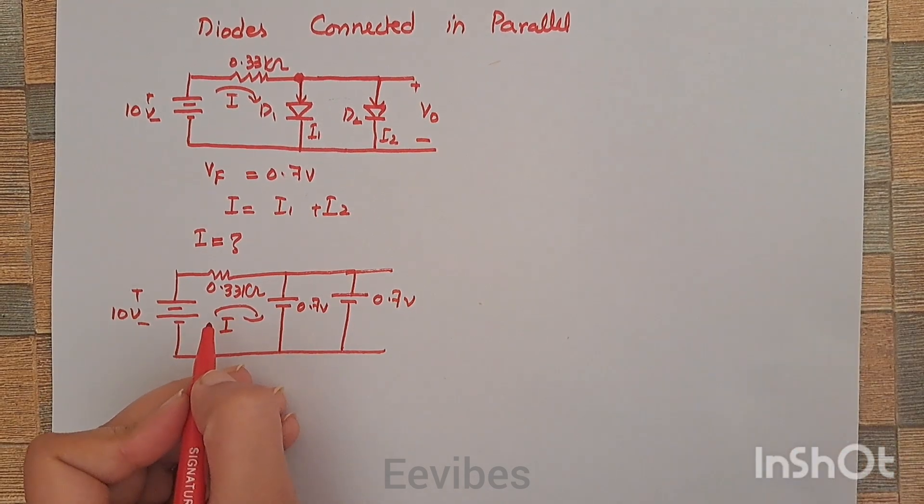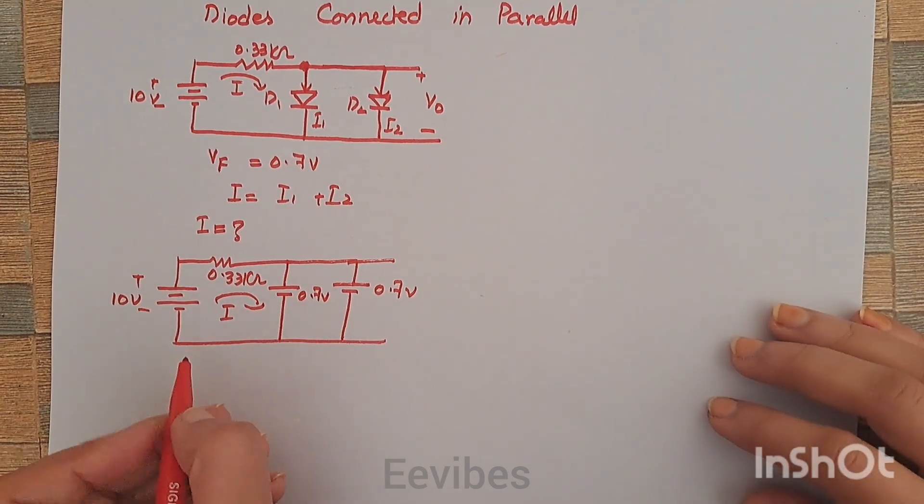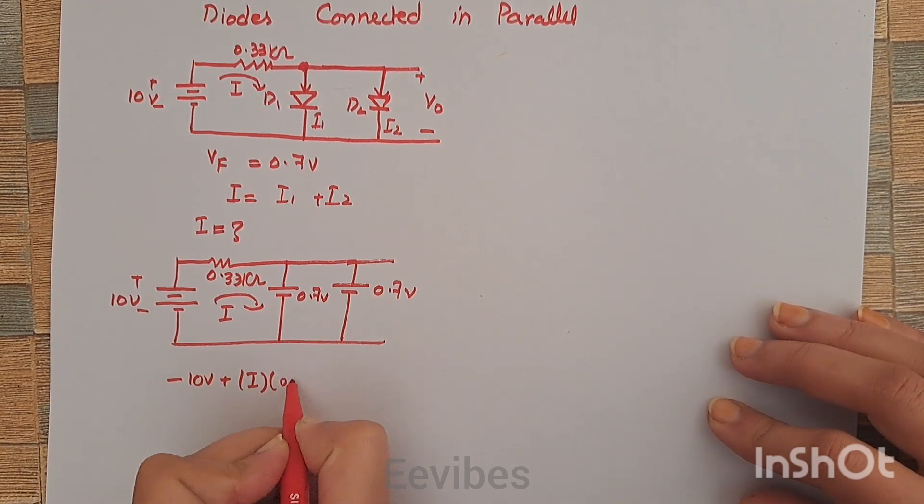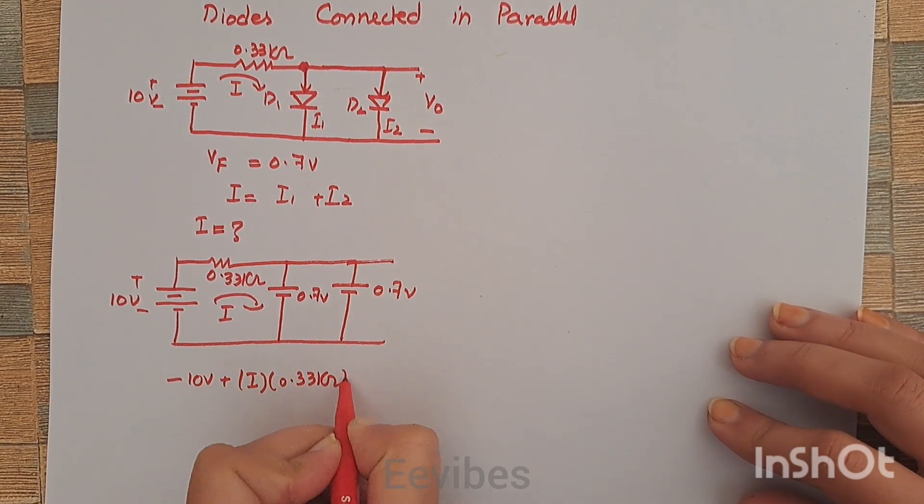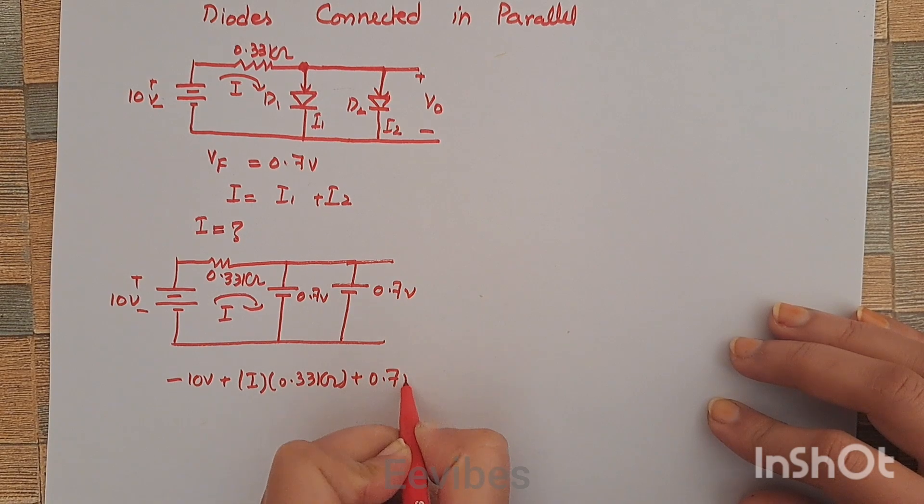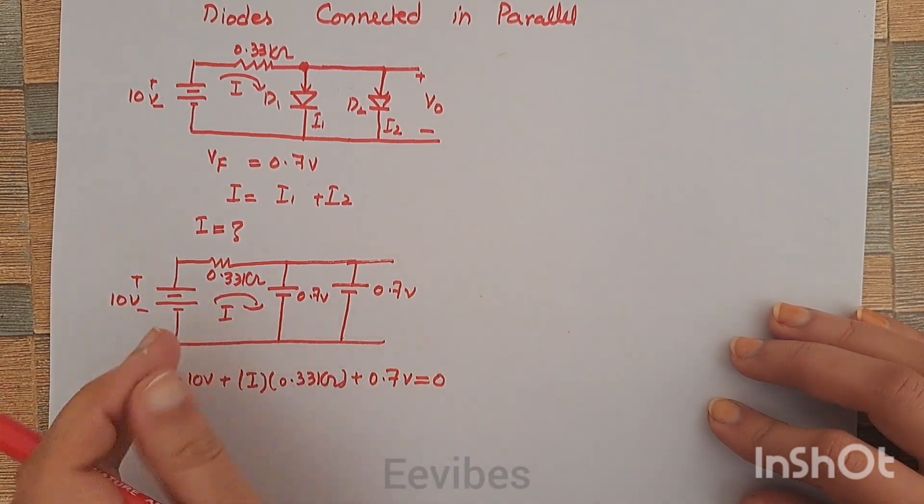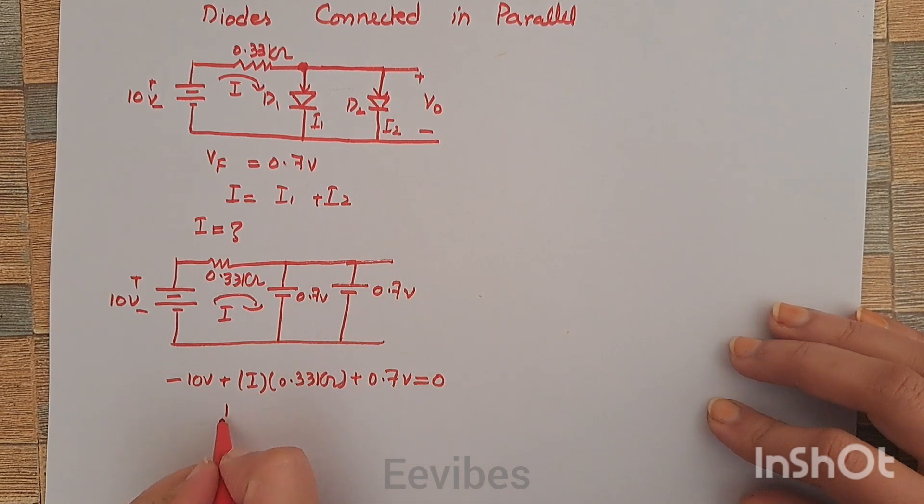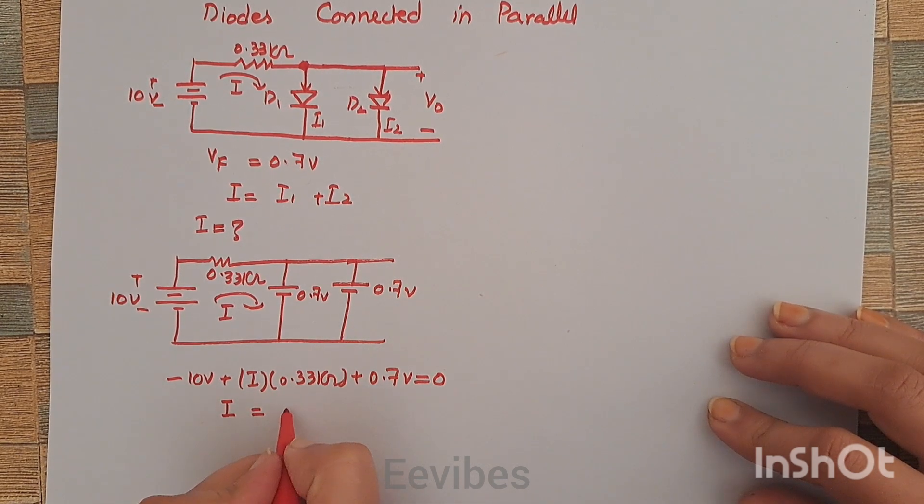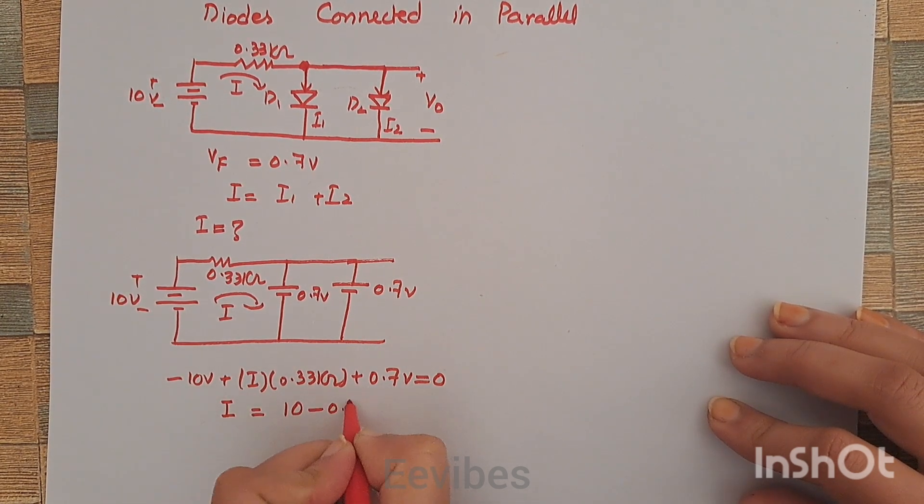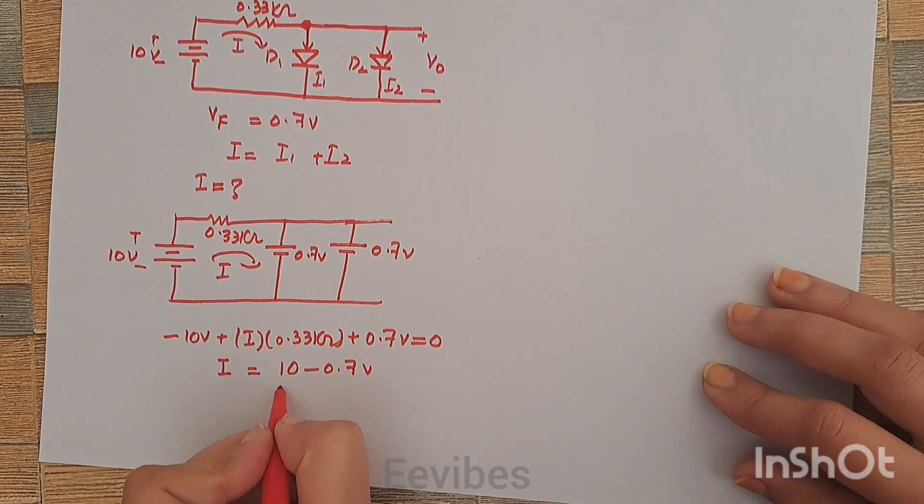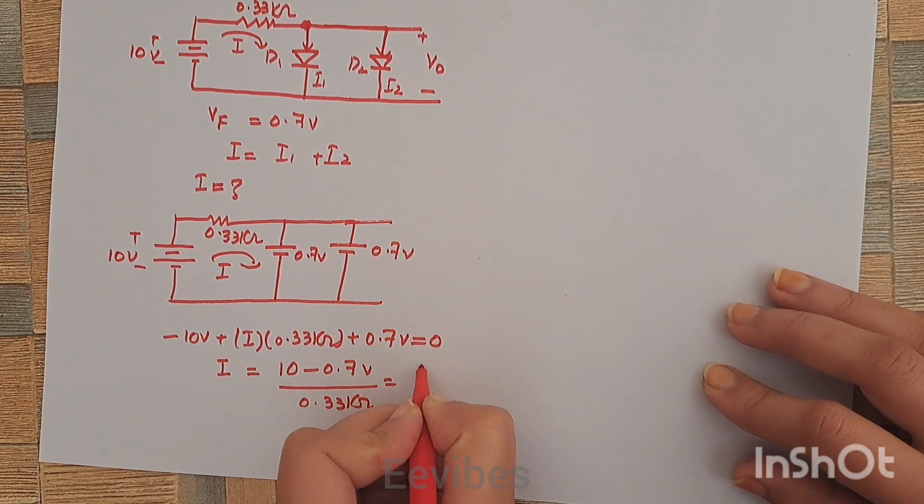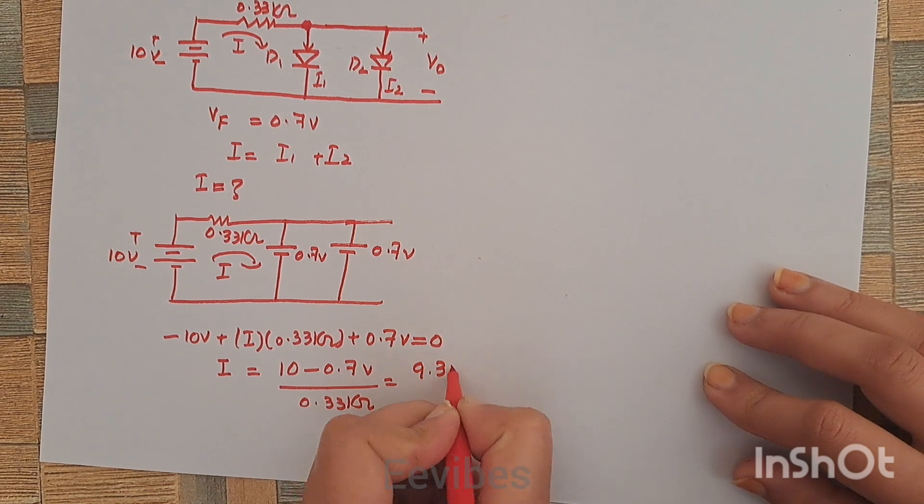According to this, you will have minus 10 volts plus I into 0.33 kilo-ohms plus 0.7 volts should be equal to 0, since I applied KVL over here. From here, I can be simply determined as 10 minus 0.7 volts divided by 0.33 kilo-ohms. That is equal to 9.3 volts divided by 0.33 kilo-ohms.